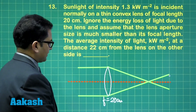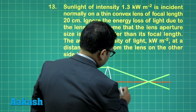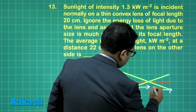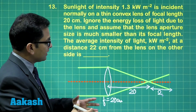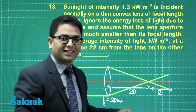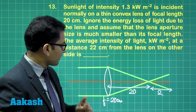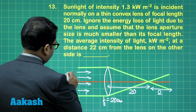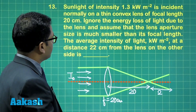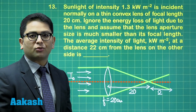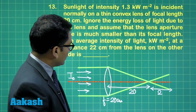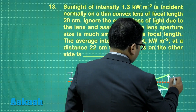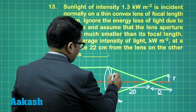So this is the situation. The focal length is 20 centimeter, and the remaining distance is 2 centimeter, because we need to calculate the average intensity at 22 centimeter. The light enters, and the intensity given — let me call it I naught — I'll be putting I naught as 1.3 kilowatt per meter square. To calculate this particular radius, let me call it small r, and the aperture as capital R.